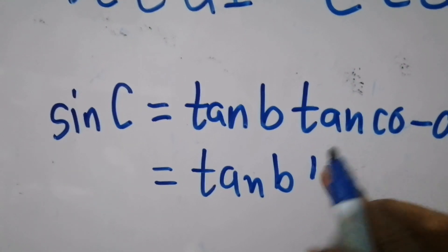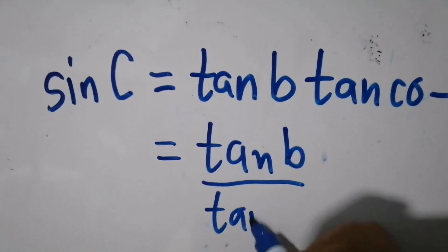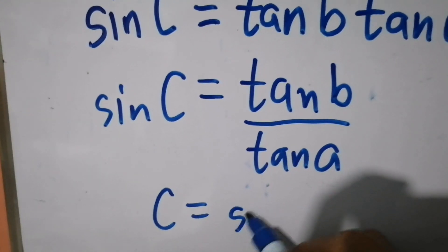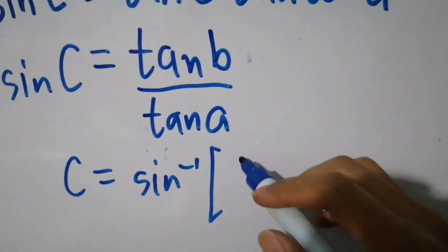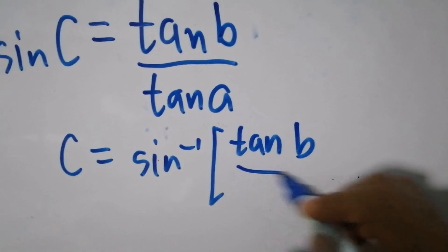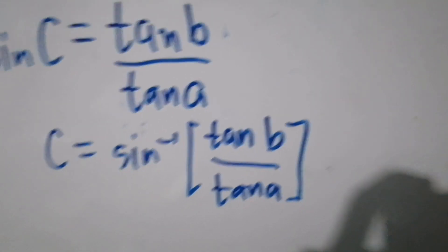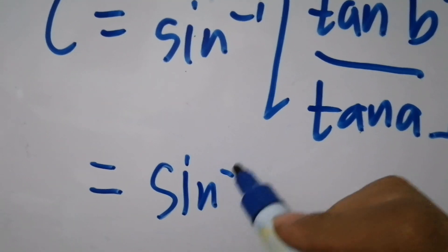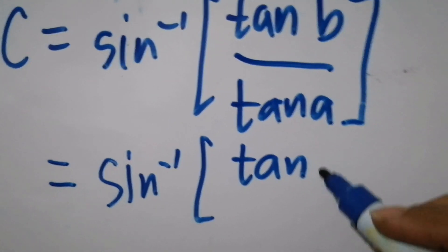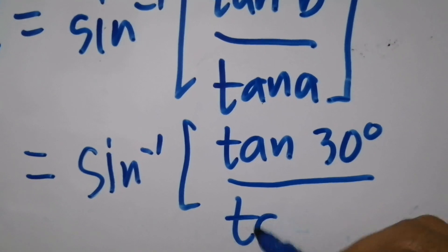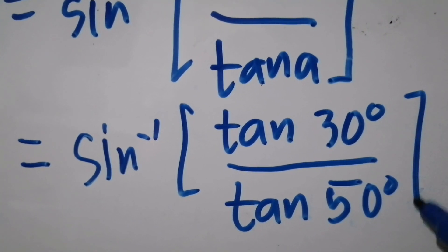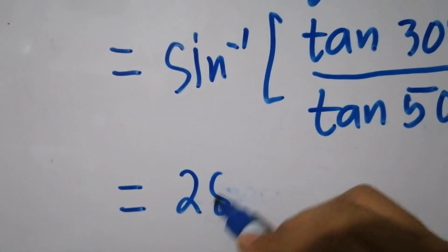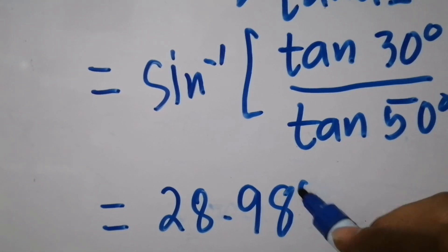Since we have tangent of co-A, we can rewrite this as: sine of angle C equals tangent of small b divided by tangent of small a. Solving for angle C gives us the arc sine of (tan b / tan a). Substituting our values — small b is 30 degrees and small a is 50 degrees — using our calculator, angle C is approximately 28.98 degrees.